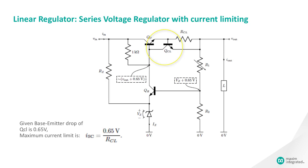When the current IOUT is great enough to put a 0.5-volt drop across the RCL resistor, QCL starts to move out of cutoff and pull more current through the 1k-ohm resistor.